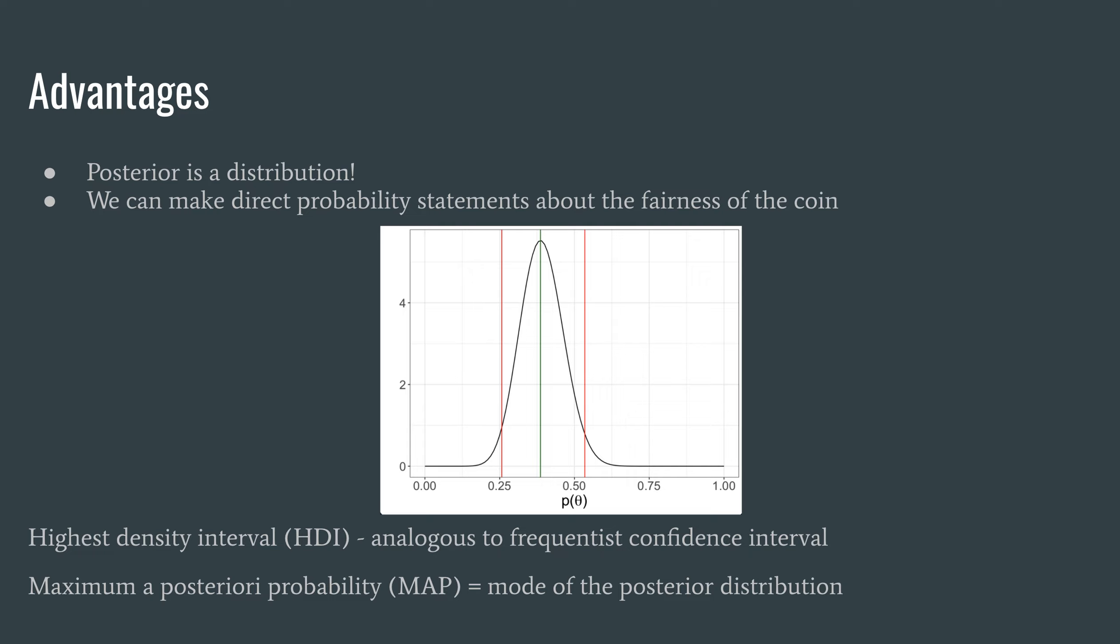So in the Bayesian approach the analogous concept is the highest density interval, which I've shown on the plot here by the red lines. And this tells us more directly where 95% of the probability density for theta lies.